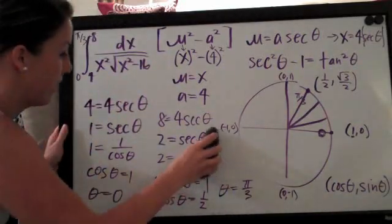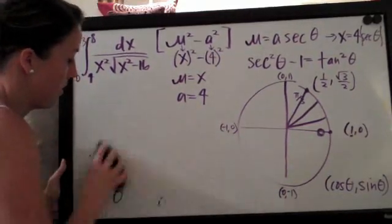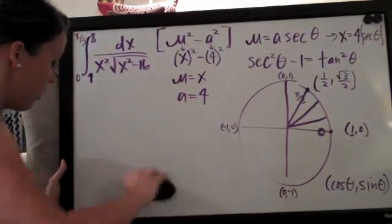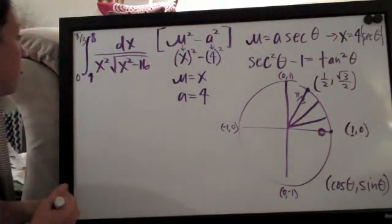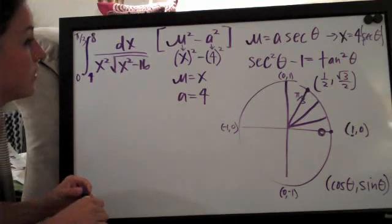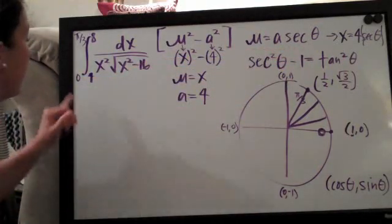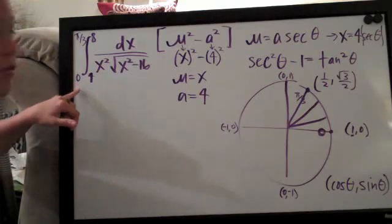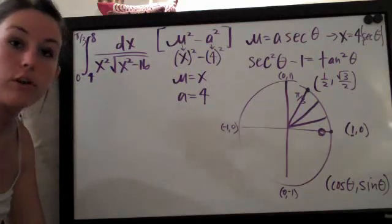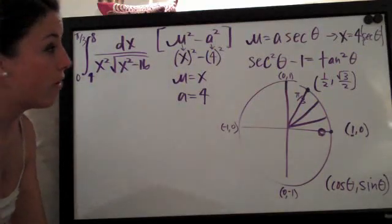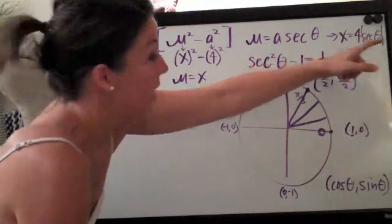So now we have converted our range from four to eight to zero to pi over three. So I can go ahead and erase all of this over here. So I know that this is tedious but it's really important that we do this to make sure that we can drop those absolute value brackets.